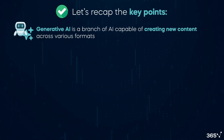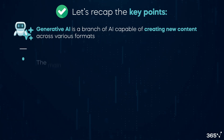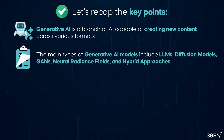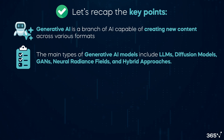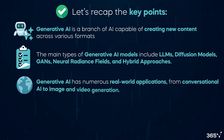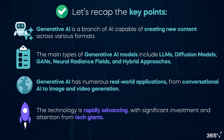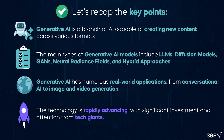Let's recap the key points we've covered in this video. Generative AI is a branch of AI capable of creating new content across various formats. The main types of generative AI models include large language models (LLMs), diffusion models, GANs, neural radiance fields, and hybrid approaches. Generative AI has numerous real-world applications, from conversational AI to image and video generation. The technology is rapidly advancing with significant investment and attention from tech giants.